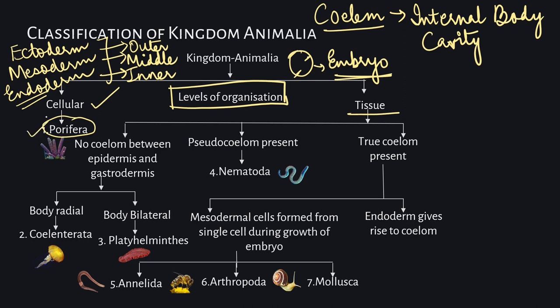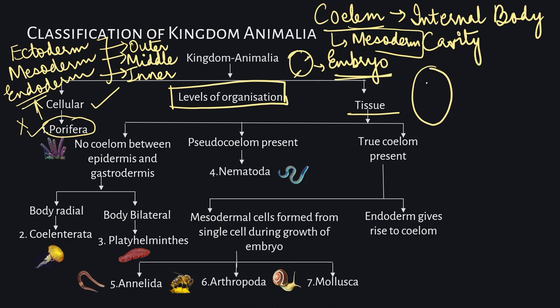Porifera does not have a very advanced cellular or tissue level. Other organisms have either the ectoderm and endoderm, or all three layers. The coelum is the internal body cavity; it develops from the mesoderm. Inside the coelum our internal organs are placed — there is an internal cavity and inside this cavity the other organs are situated.